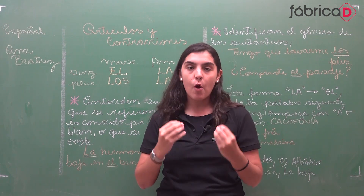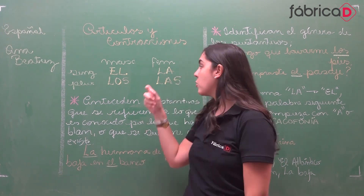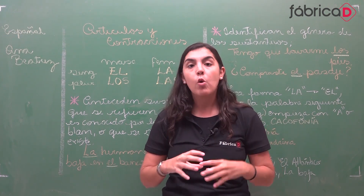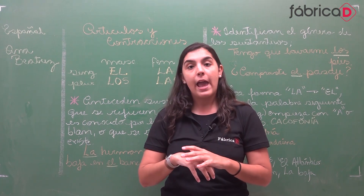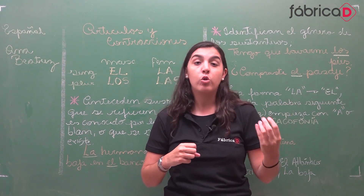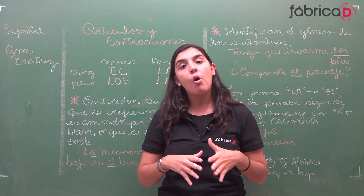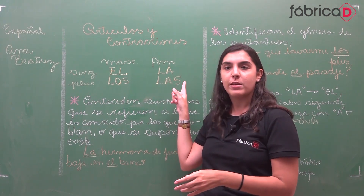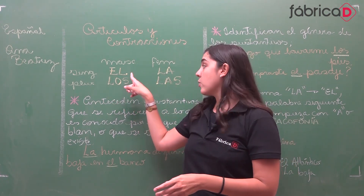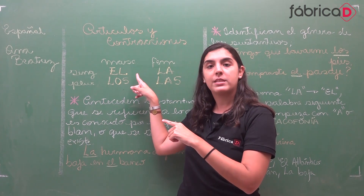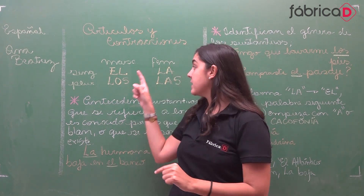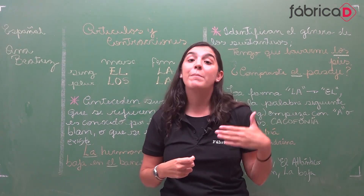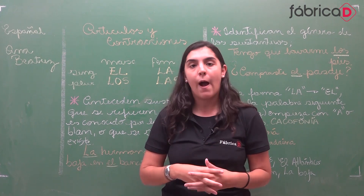Atenção aqui: não confundam o artigo 'el' com o artigo neutro 'lo'. A gente tem sim o 'lo' em espanhol, mas o 'lo' é outra matéria — usa-se no artigo neutro ou no pronome complemento direto. Só porque 'la' é feminino e 'los' é masculino plural, o singular masculino não seria 'lo', mas sim 'el'. E atenção: esse 'el' é sem acento. O 'él' com acento seria o pronome pessoal.